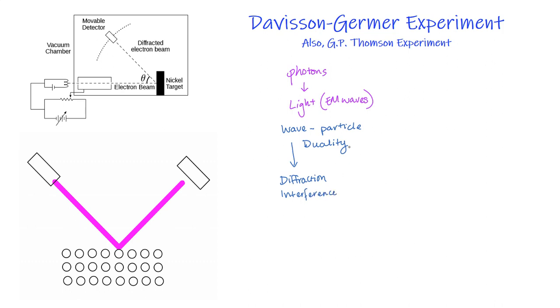And we saw that they could also exhibit particle-like behaviors. So they had some kind of momentum, and they could interact with matter. And that was found through the Compton scattering experiment, and also that photoelectric effect experiment.